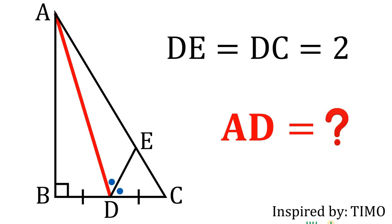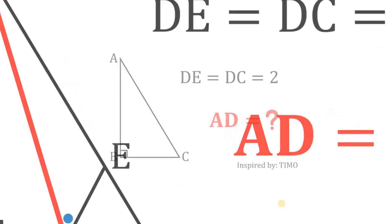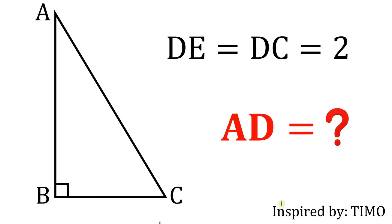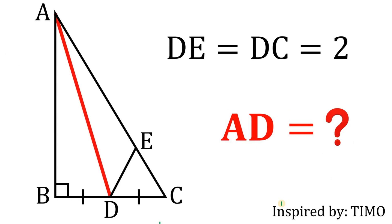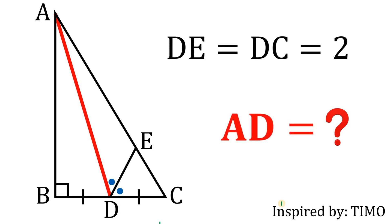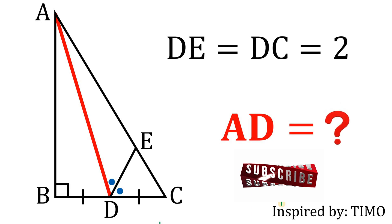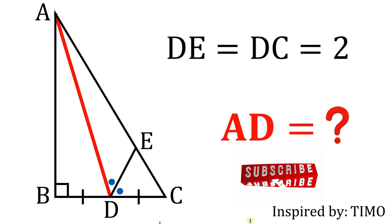Today we will answer a geometry challenge inspired by the Thailand International Mathematical Olympiad. In a right triangle ABC, angle B equals 90 degrees. Point D is the midpoint of BC, and E is on AC such that DE bisects angle ABC. If DE equals BC equals 4, what is the length of segment AD? Pause this video and see if you can answer this question, because I will show you the solution in three, two, one.